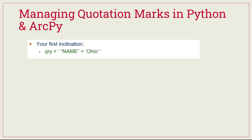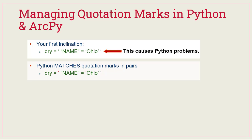So your first inclination might be to adhere to the conventions of double quotes along each side of the field name, equals, and use single quotes around the state name, then put that all within another set of quotation marks. However, this is going to cause Python problems because Python wants to match those quotation marks in pairs. When you put the entire query inside another set of single quotes, the next single quote it finds is the one to the left of 'Ohio,' flagging everything after as a syntax error.